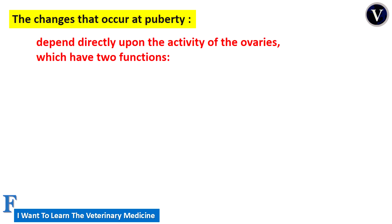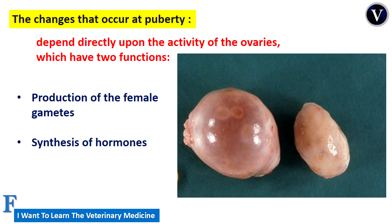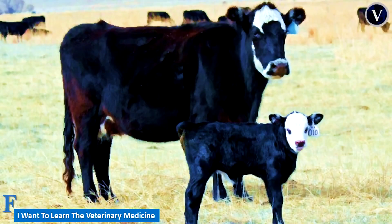The changes that occur at puberty depend directly upon the activity of the ovaries, which have two functions: first, the production of female gametes, and second, the secretion of hormones. Female gametes are also called eggs or ova.